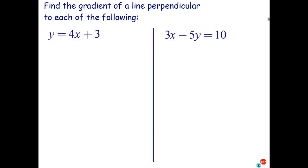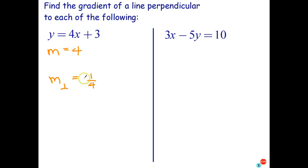To summarize: the product of the gradients of two perpendicular lines is always negative one. Let's use that to answer these questions. Find the gradient of a line perpendicular to each of the following. For the first line, the gradient is the coefficient of x which is four, so m equals four. The gradient of a perpendicular line is the negative reciprocal: the reciprocal of four is one over four, so the negative reciprocal is negative one-quarter.